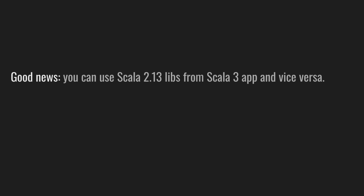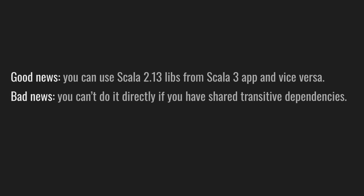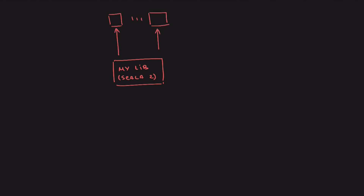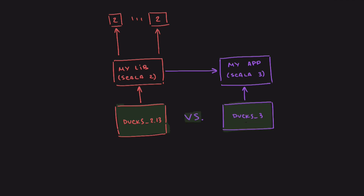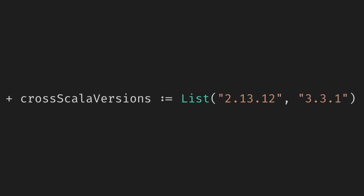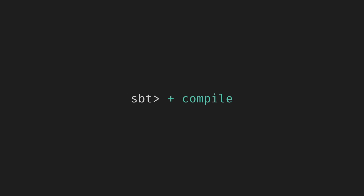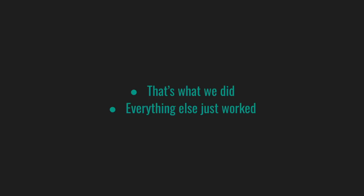There are multiple ways of sharing a library between Scala 2 and Scala 3 services. The good news is that you can use Scala 2.13 libraries from a Scala 3 app and vice versa. The bad news is that you cannot do this directly if you have shared transitive dependencies — but the good news is it's actually pretty easy to deal with. You can cross-publish your library to both versions by adding one line to your build to cross-compile. Prefix the action with a plus, for example plus compile, to build against all versions listed in cross-scala versions. At least that's what we did, and everything else just worked.